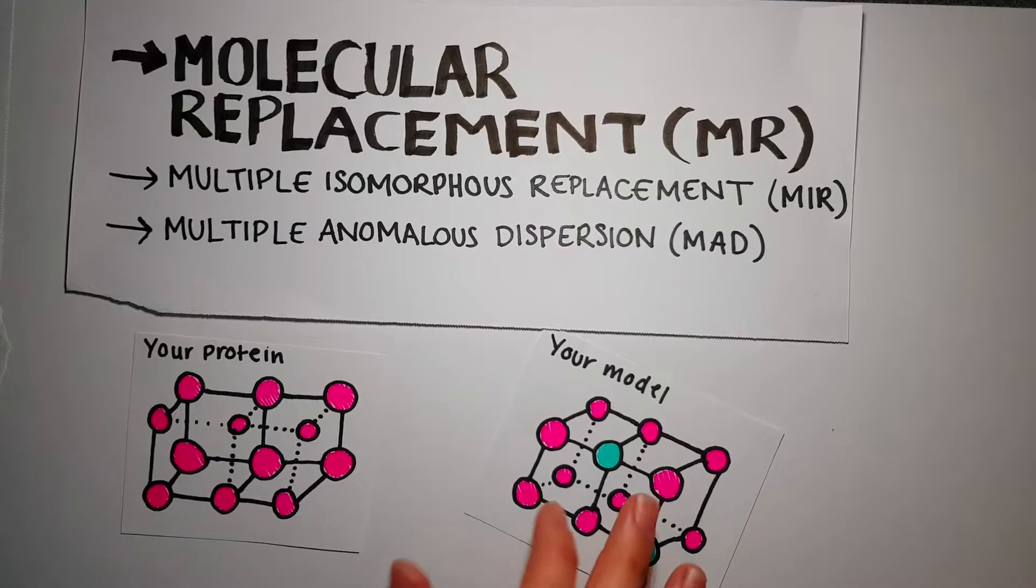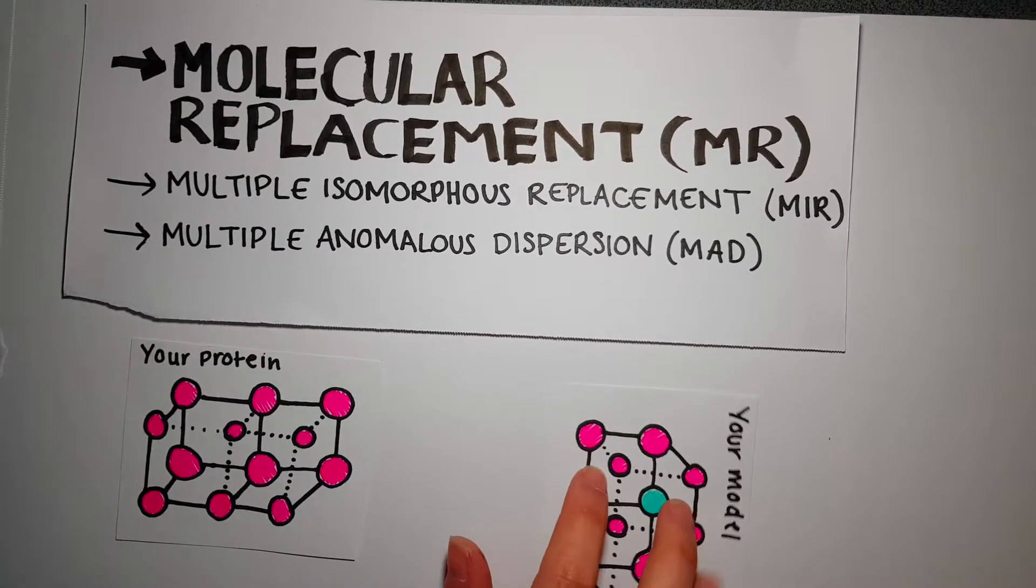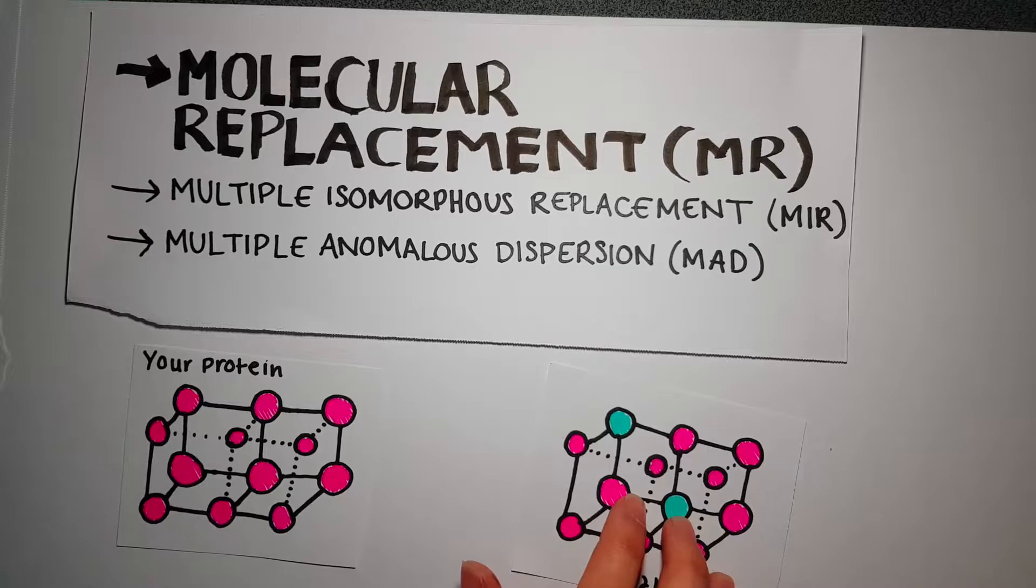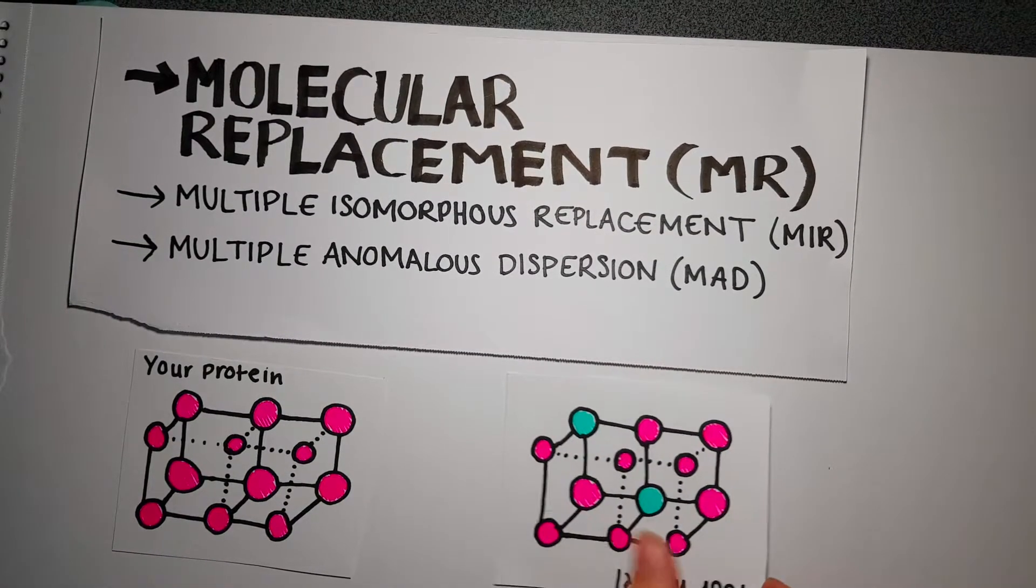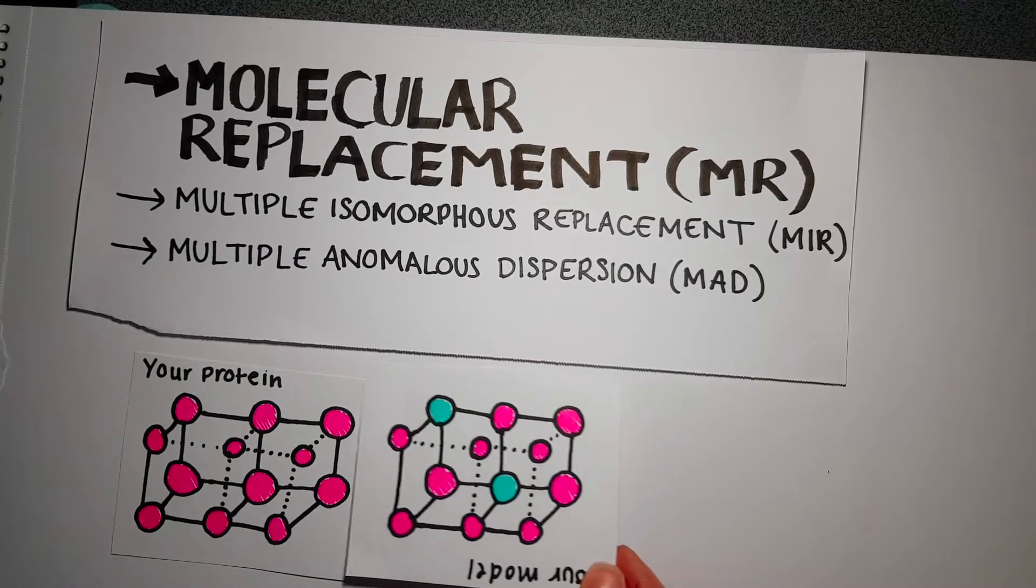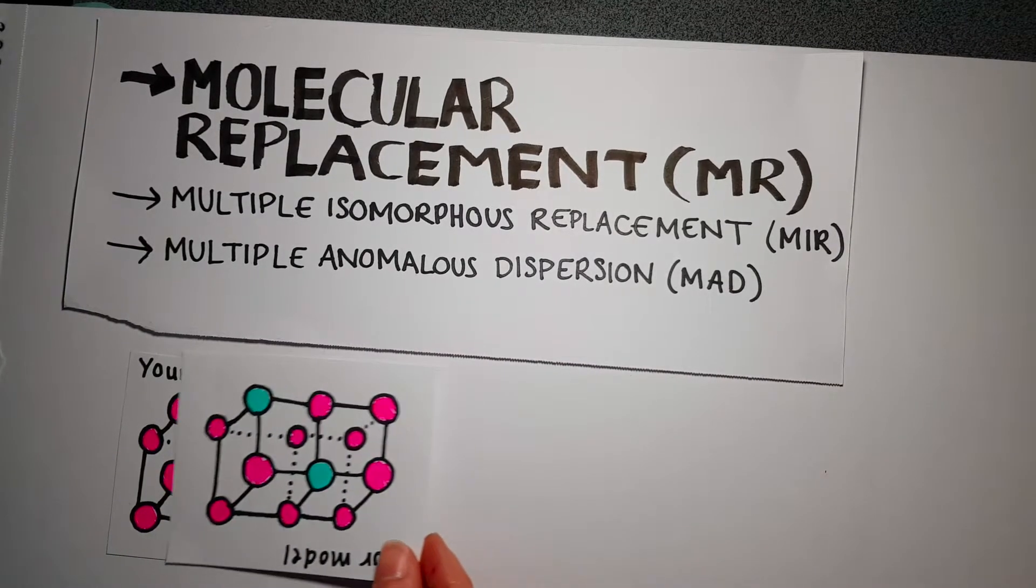First, a rotation function rotates the model to match your protein's rotational position. Second, a translation function moves the reoriented model through the unit cell to align with your protein's position.